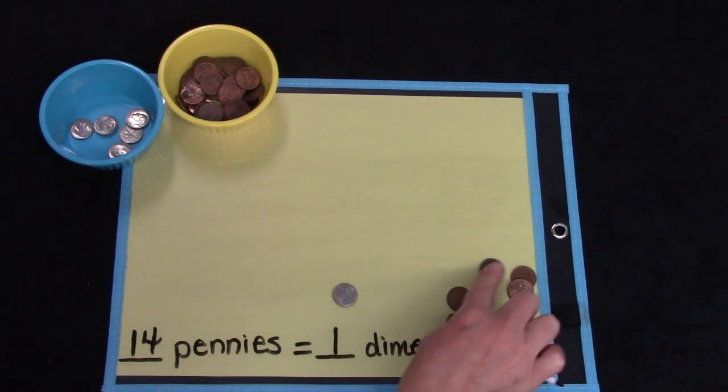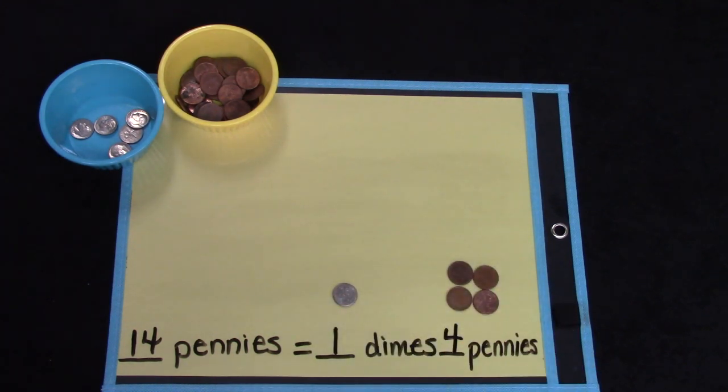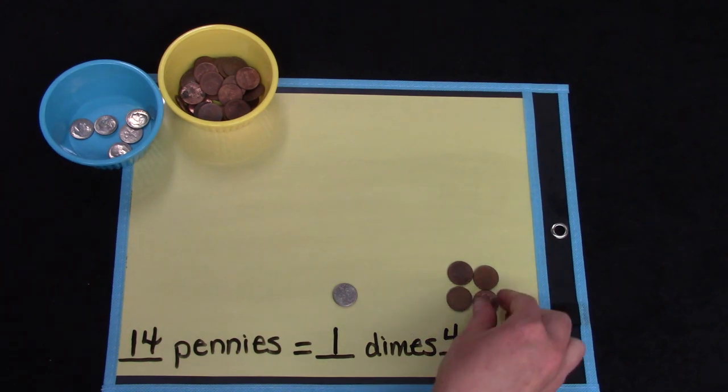1 dime and 4 pennies. 10, 11, 12, 13, 14. Well, let's try this again.